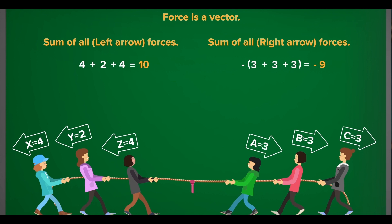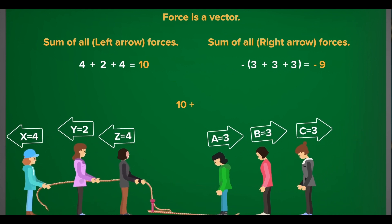In the tug of war example, we assign the left direction as positive. Hence, the right direction would have to be negative.